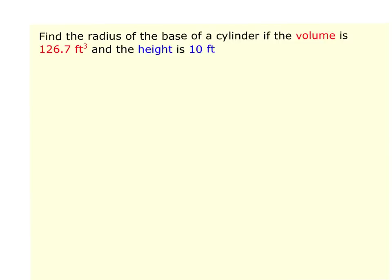In this example, we have to work backwards. If you read what it says, it says that we are going to find the radius of the base of the cylinder if the volume is 126.7 cubic feet and the height is 10 feet. So basically what we're doing here is we are given the volume, we're given the height of the cylinder, and we want to figure out what the radius is. So remember that the volume of a cylinder is the area of the base, which is πr², times the height of the cylinder.